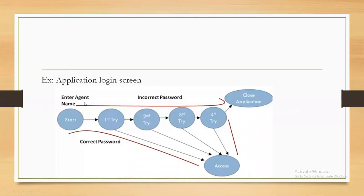You enter a valid agent name with an incorrect password on the first attempt — it should give an error message. If you give the correct password, it should access the application. On the second attempt with an incorrect password, again an error message. Third attempt with incorrect password — again an error message. On the fourth attempt with an incorrect password, the error message is displayed and the application will also be closed.